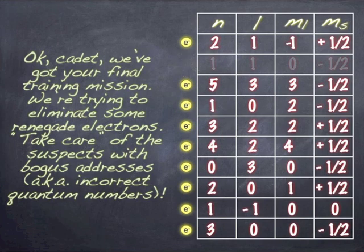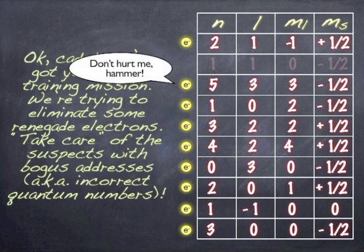So take a look at the next one. What do you think? Legit or not legit? Legit, right? N can be 5. N can be any positive integer. So if N is 5, L can go up to 3. Remember that you can have 0, 1, 2, or 3. You can't go beyond 3 because 3 is the F subshell. But if L is 3, M sub L can certainly be 3 and spin can be minus 1 half. So you're good to go.